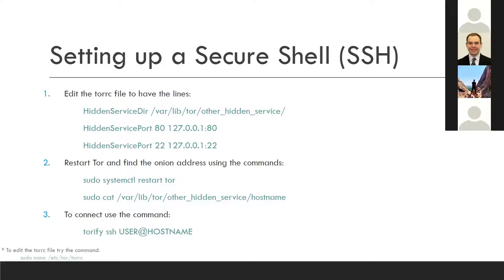Restart Tor and follow the same process to find the hostname — it should be a different hostname from the web service. Then connect using the command 'torify ssh user@hostname', where the user is your username and the hostname is the onion address from the sudo cat command.